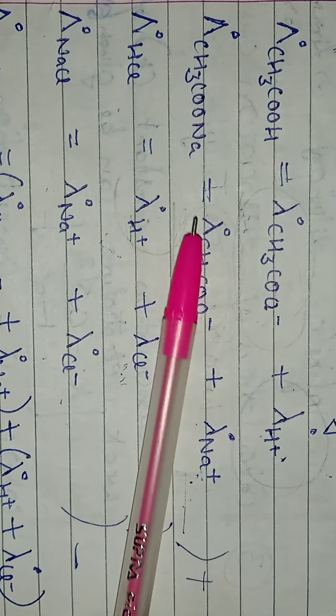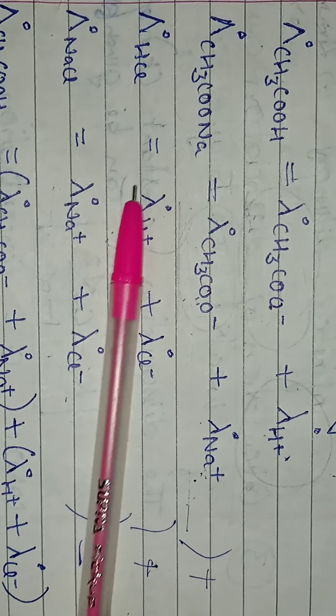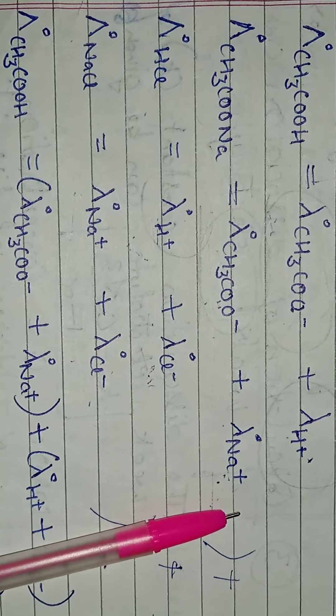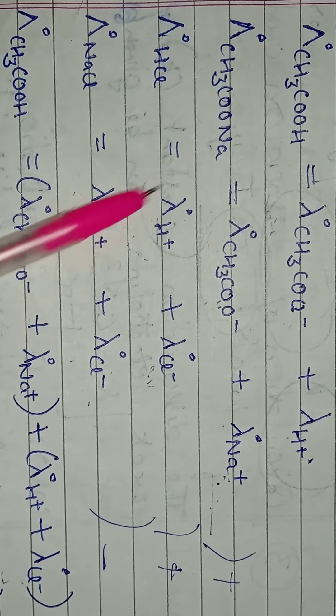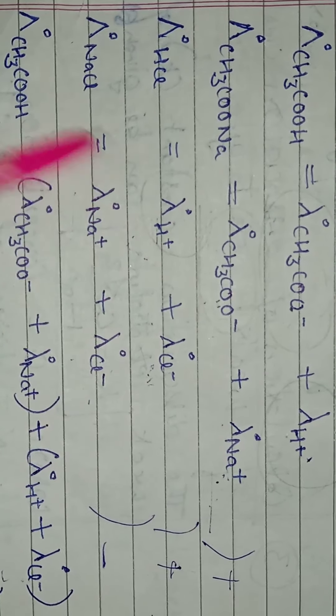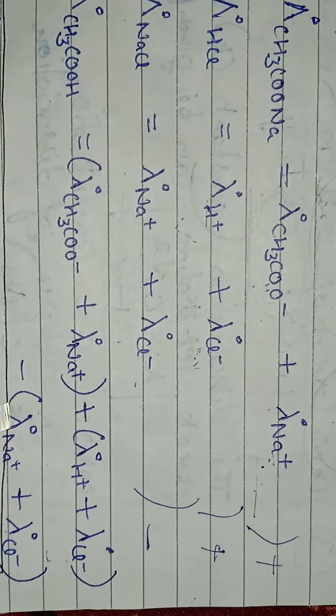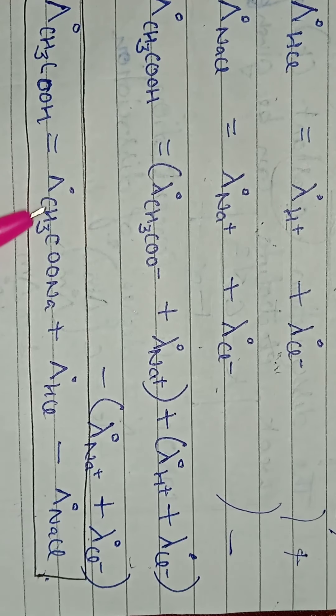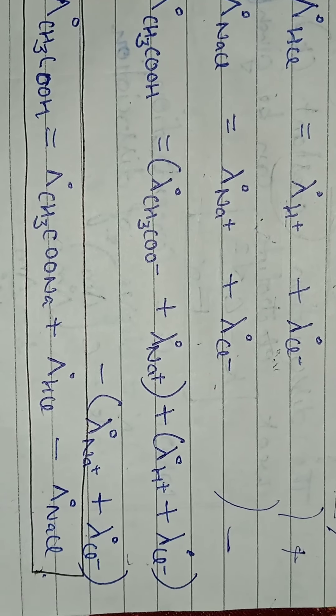In dono ko, hum ne plus kar diya, CH3COONa ko, aur HCl ko, aur NaCl ka minus kar denge. Dekhiye, ye aa raha hai, isko, plus this, plus this, and plus this, minus this. Aapka jo answer aayega, woh aa jayega, CH3COONa, plus HCl ko, aur NaCl, usmein se, minus kar diya.